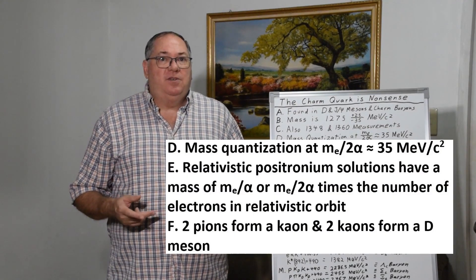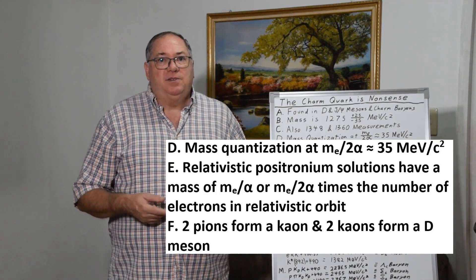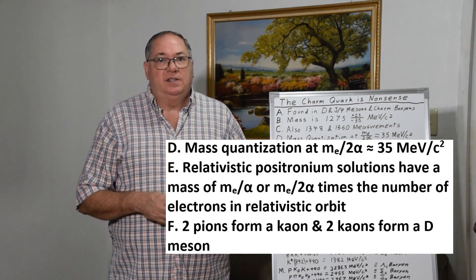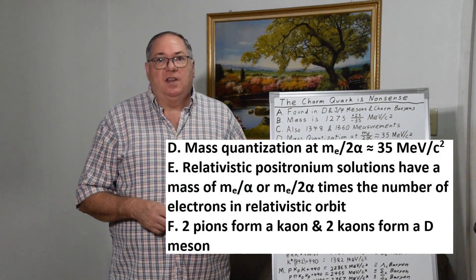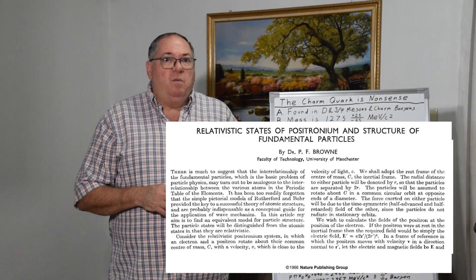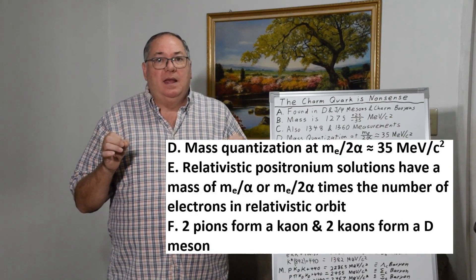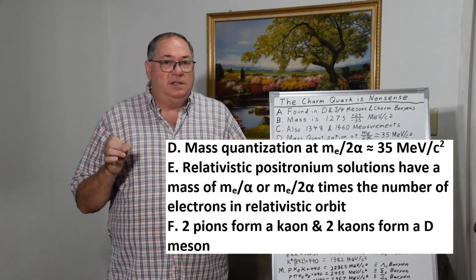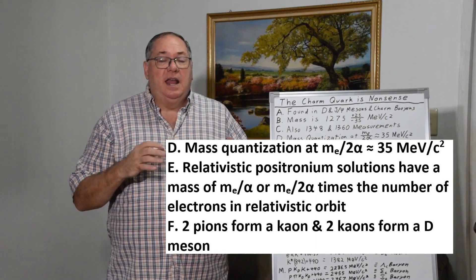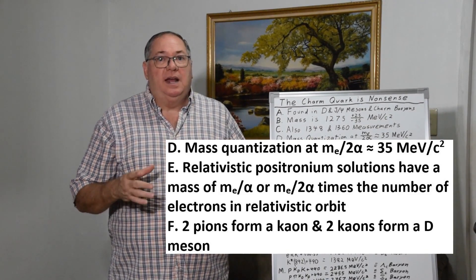Now, to really understand what the charm quark really is, we need to go back to the positronium solutions, the relativistic positronium solutions that were initially discovered by Milne, and then rediscovered by Sternglass and refined by Brown. And what they basically found out is if you take an electron and positron pair, positronium, there's two solutions. There's one that's non-relativistic that's well-known, but there's a relativistic one at higher velocity where you get much higher energies.